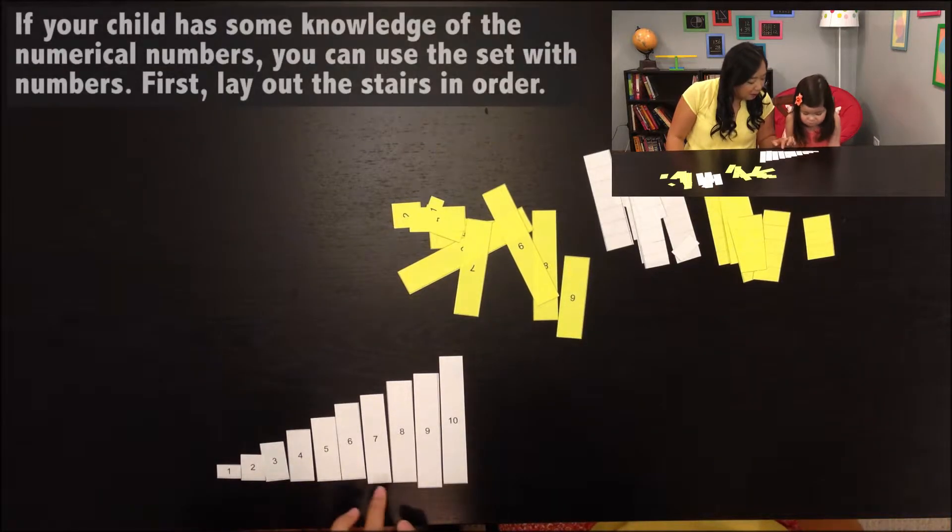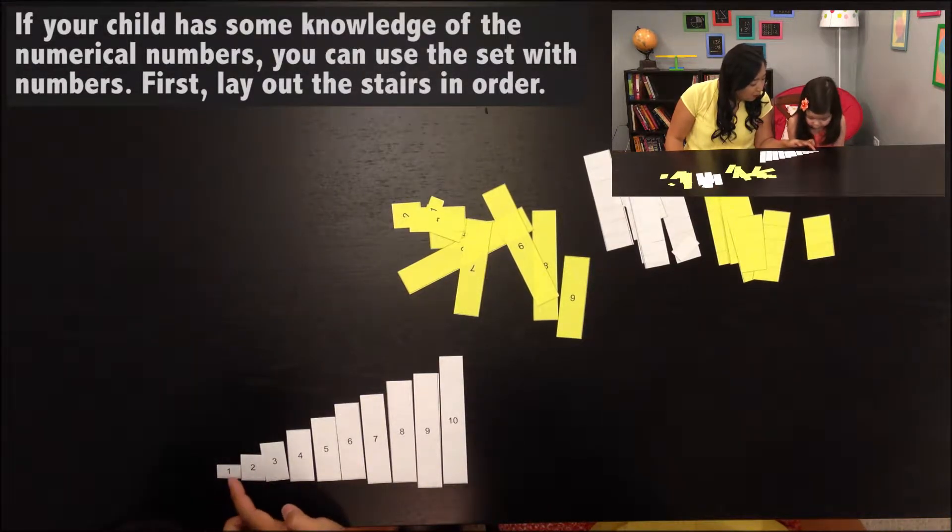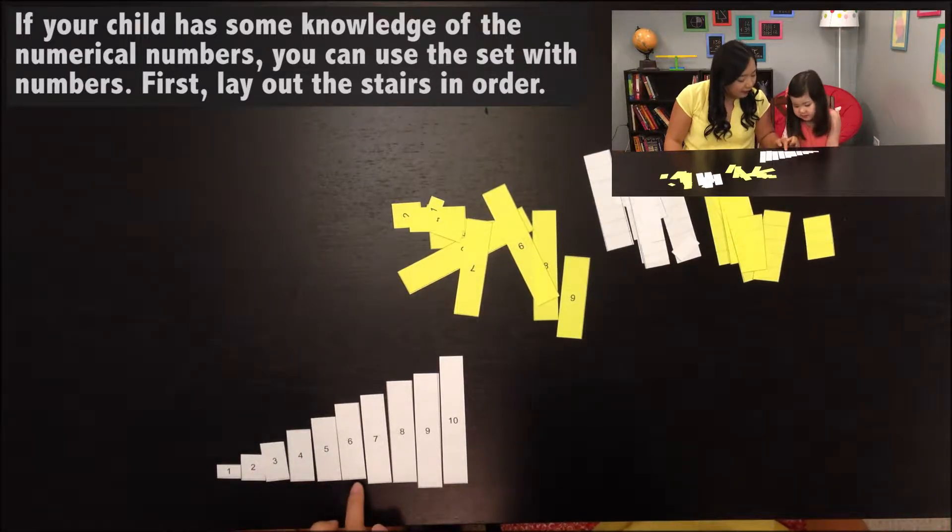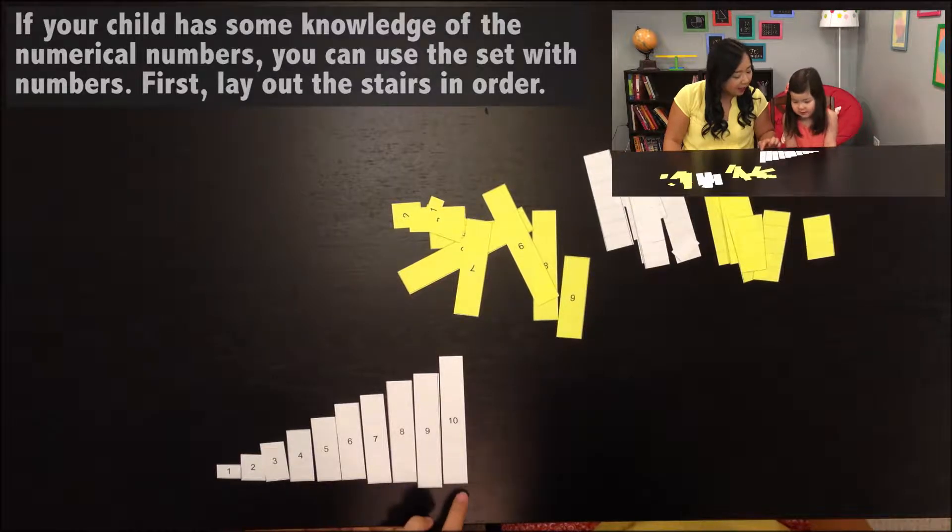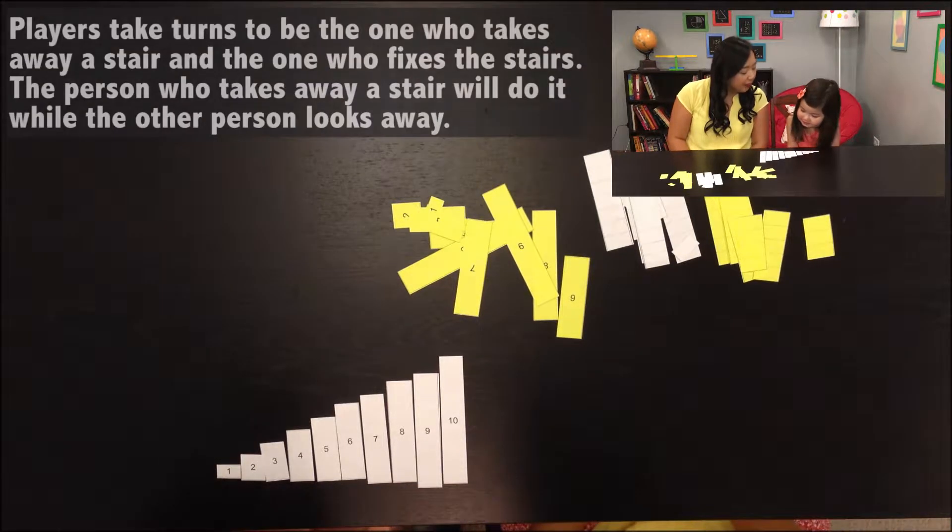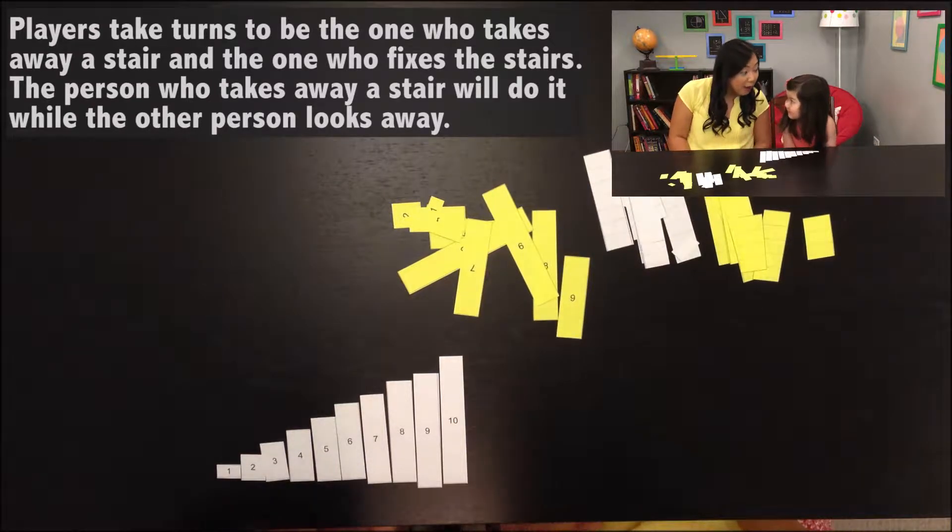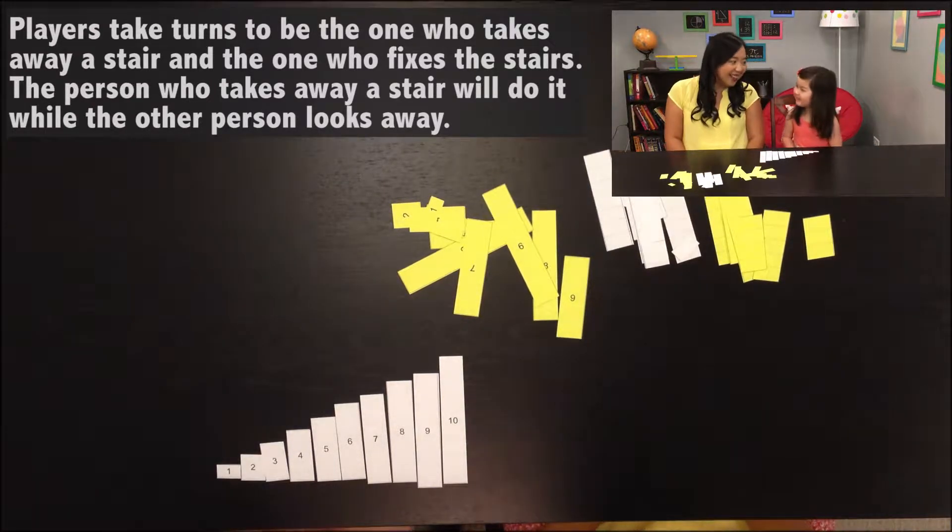So this is how we're going to play this game. The number stairs go from 1, 2, 3, 4, 5, 6, 7, 8, 9, 10. And we're going to take turns. One person is going to take away one stair.